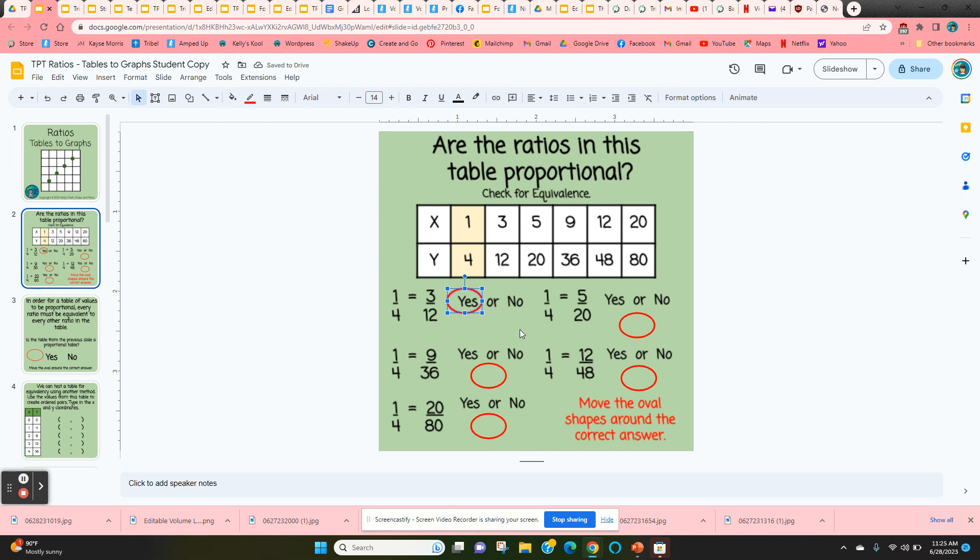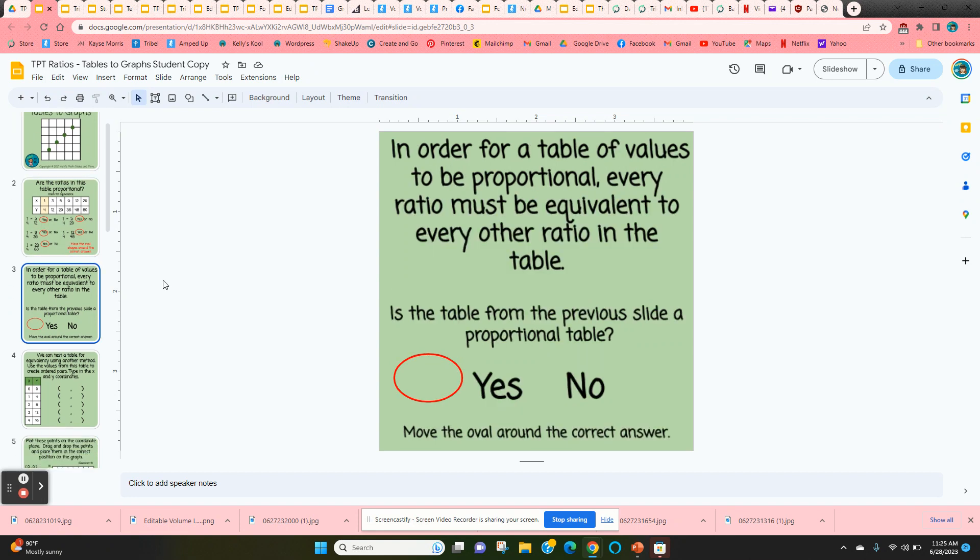Is 1 to 4 equivalent to 4 to 36? And so on. If they answer them all yes, then it's a proportional table. Is 1 to 4 equivalent to 5 to 20? Yes. And is 1 to 4 equivalent to 12 to 48? So this is a proportional table because all the values are equivalent.